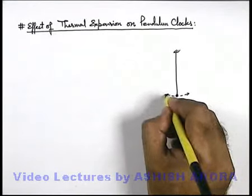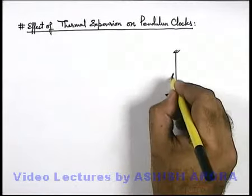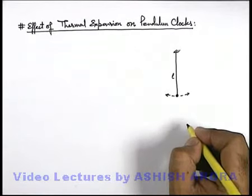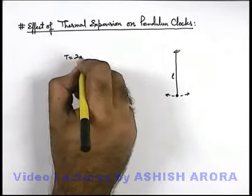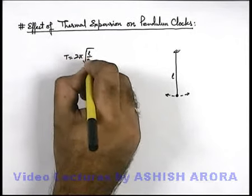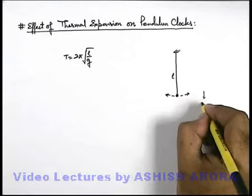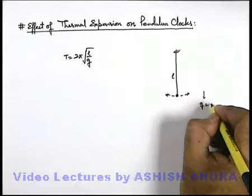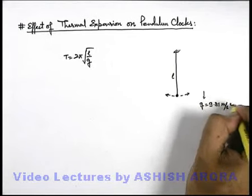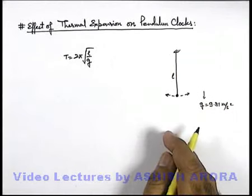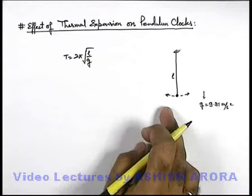In general, the time period is measured for a pendulum clock which has a pendulum of length l. We know that the time period of a pendulum is given by 2π√(l/g), where g is the acceleration due to gravity, generally taken as 9.81 m/s², and l is the length of the pendulum. Based on this time period only, clocks measure time.